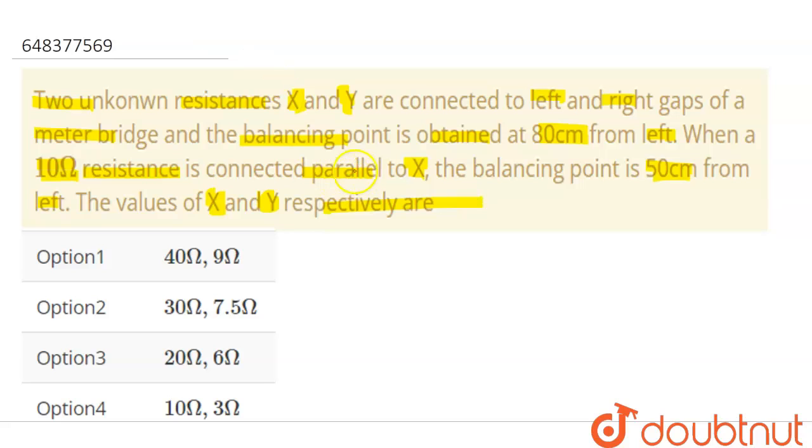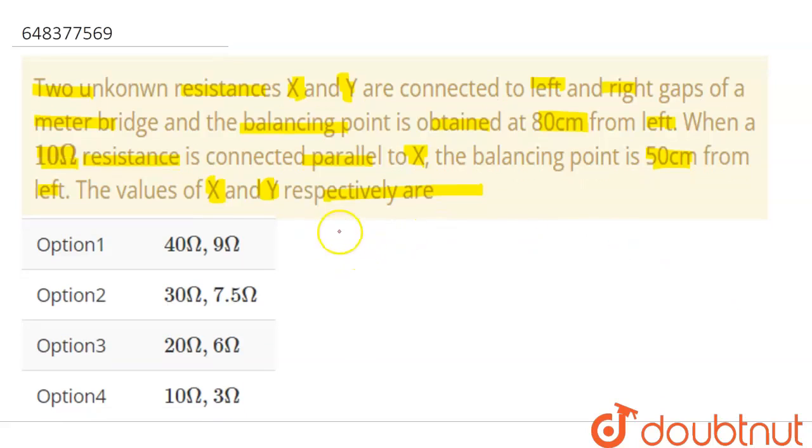So let's solve this. For meter bridge we have been given two resistances that is x and y and the balancing point as well. The very concept that we know from meter bridge is that x over y, the two resistances, refers to the balancing point that is l over 100 minus l. We all must be aware of this formula.